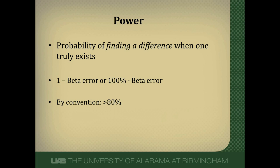If you read a statistical section, you'll often see researchers say they powered the study at 90% to find a 20% difference between two arms. That 90% means a 90% chance the study is going to find what the researchers think it's going to find — and by convention, a 10% chance it won't. Power is calculated from beta error: it's 1 minus the beta error if expressed as a decimal, or 100% minus the beta error as a percentage. By convention, we set power at least 80% — never lower than 80% when you design a study.